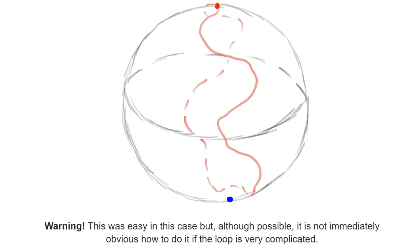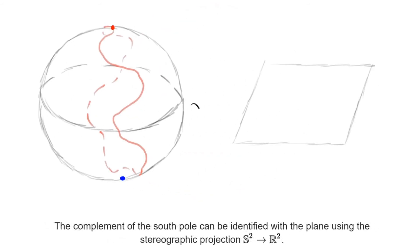You can probably imagine as well a path in the sphere that covers it completely in a very wild manner, which shows that in general it may be not so easy to displace a given path from the south pole. In any case, this is indeed possible, and once we've done that we can identify the rest of the sphere, the complement of the south pole, with the plane.